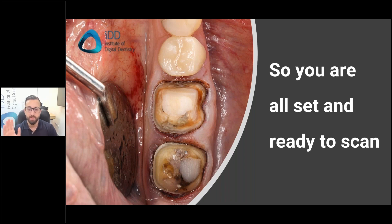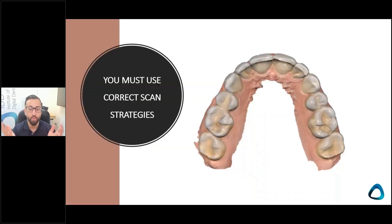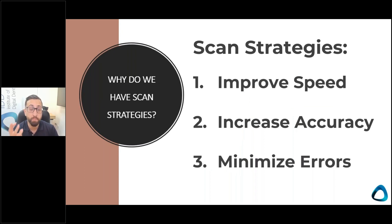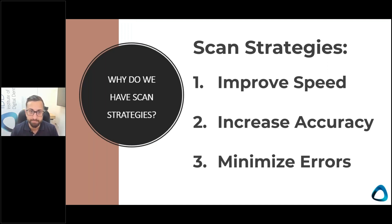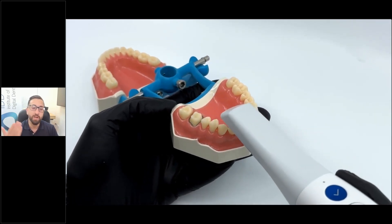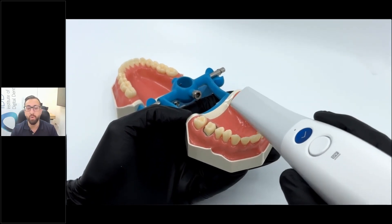Now you're set up with the scanner and computer and ready to scan. First and foremost, you need to use correct scan strategies. In the Medit software there is smart stitching and AI features, but without a doubt, using scan strategies improves your scan speeds, increases accuracy — this has been literature proven — and helps minimize errors. Rather than haphazardly scanning around, a continuous fabrication of the digital impression rather than stitching a lot of data together will improve accuracy. The occlusal scan first, then the palatal, then the buccal — or any variation of this — is how I do a scan in my office.